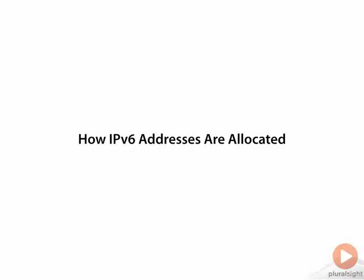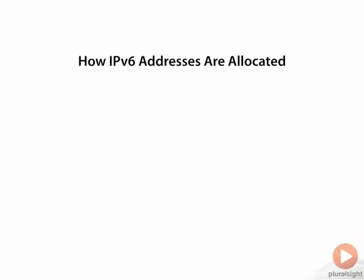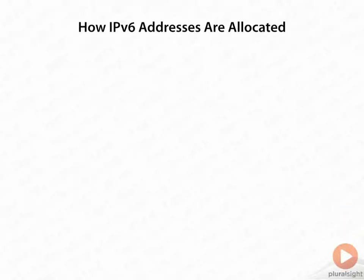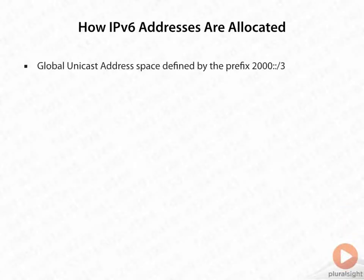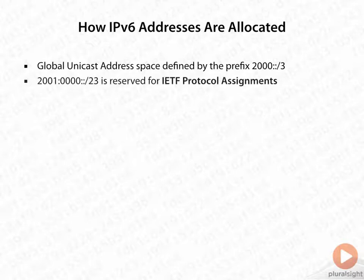Now, let's look at how IPv6 addresses are allocated. With IPv6 addresses, we have a global unicast address space, and that's defined by the prefix 2000::/3.